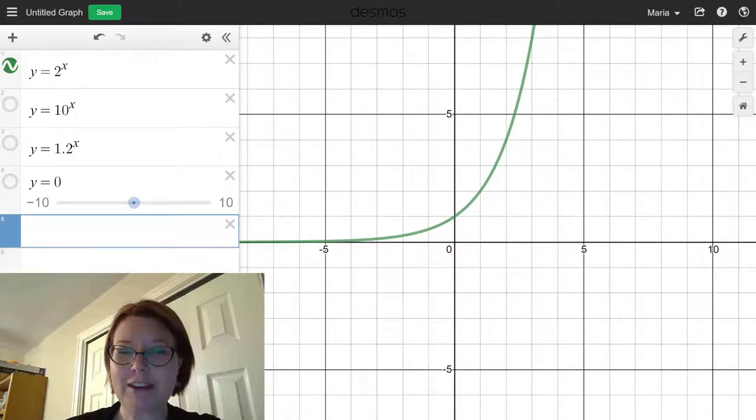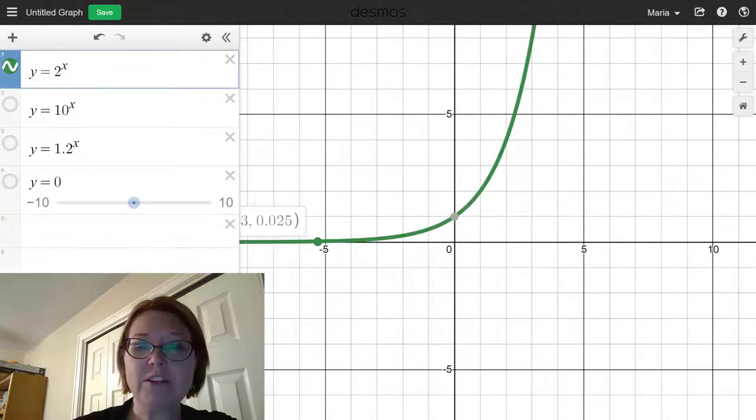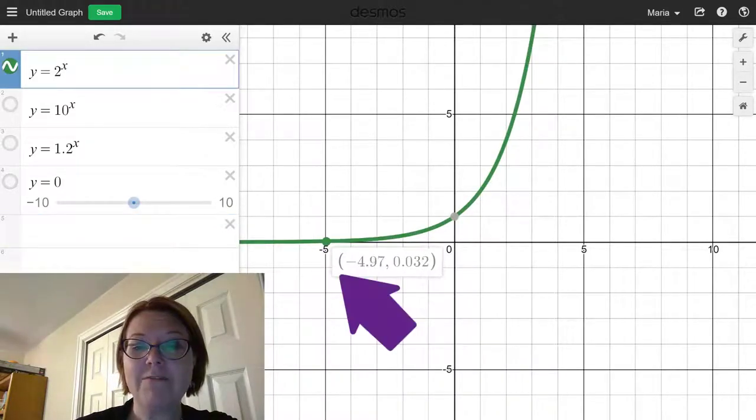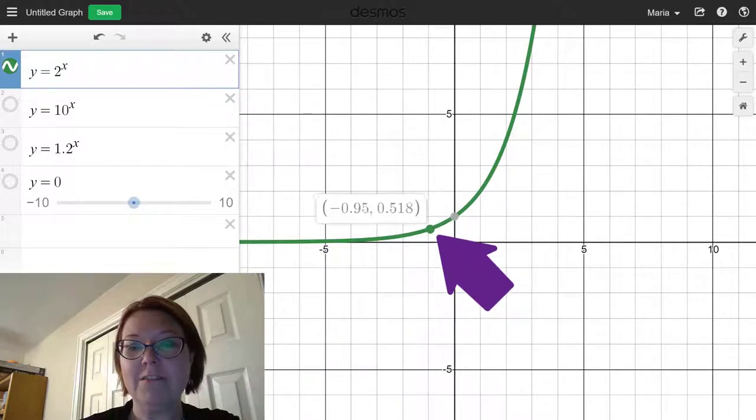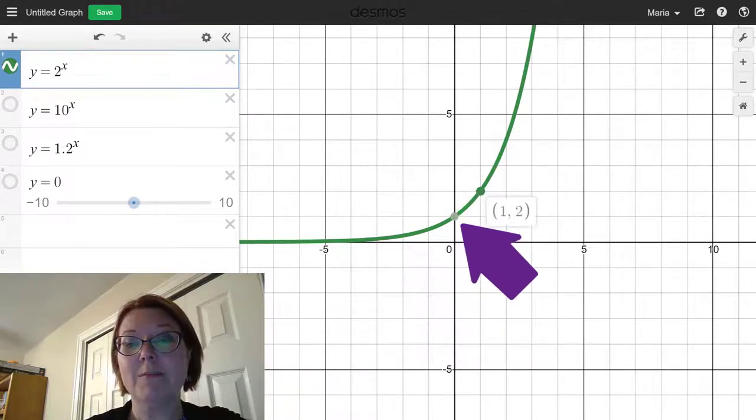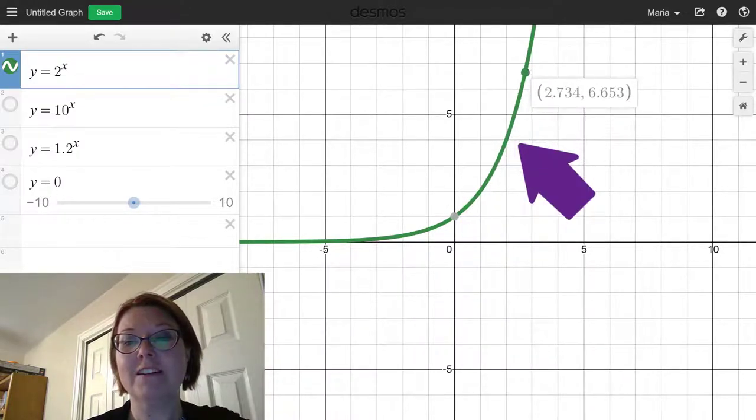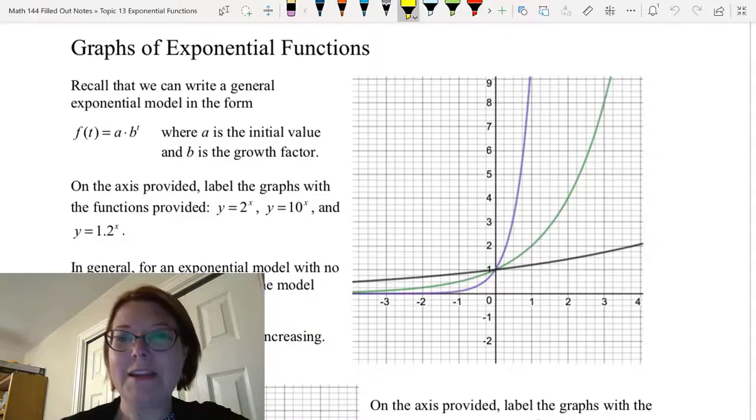Let's start with the graph of 2 to the x. This is a graph that appears above the x-axis. It's always increasing, and if I drag my cursor along the graph we have points at like negative 5, 0.031 and negative 2, 0.25, negative 1, 0.5, 0 comma 1, 1 comma 2, 2 comma 4, and 3 comma 8. Let's go ahead and label this on the notes that we have.